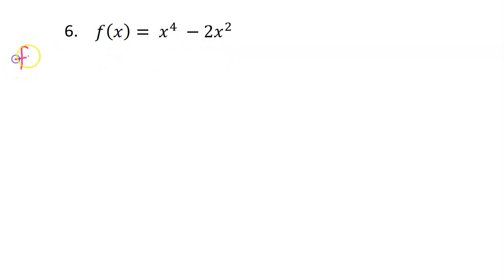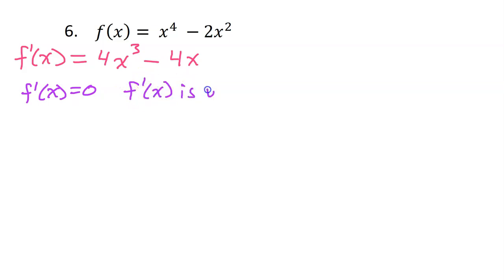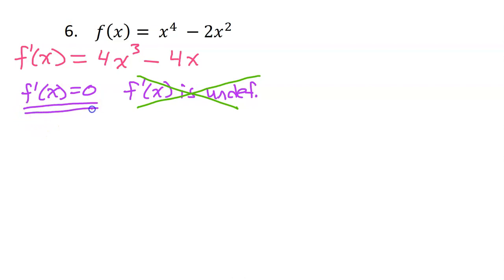So we have learned that the first step is to find the derivative, so we can see where that is positive or negative. The power rule gives us 4x to the third power minus 4x. So there's the derivative. Now we find the critical numbers based on where f prime is equal to 0. Ordinarily, we would also ask where f prime is undefined. However, this is a polynomial, and there's nowhere that a polynomial will be undefined. So we can just focus on setting f prime equal to 0.